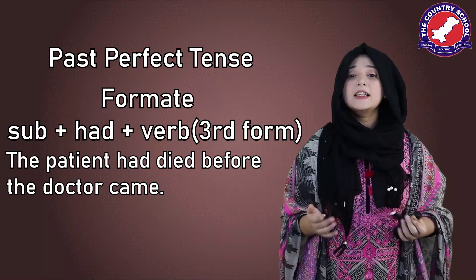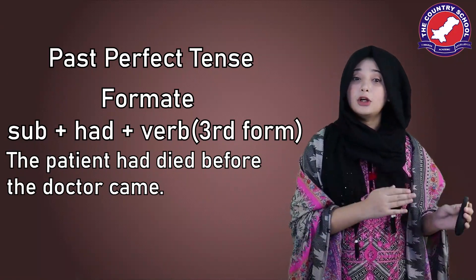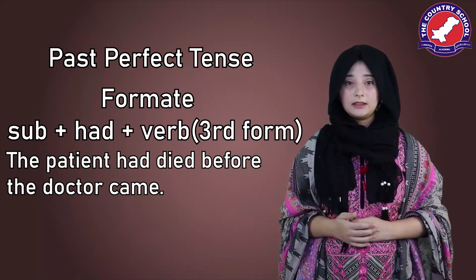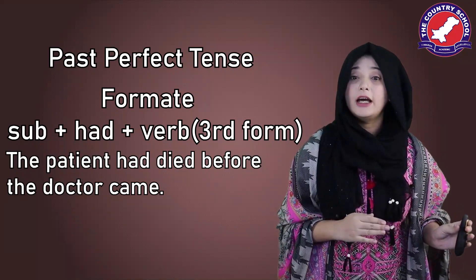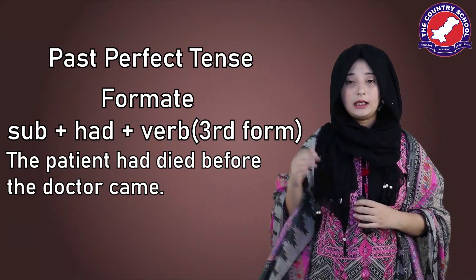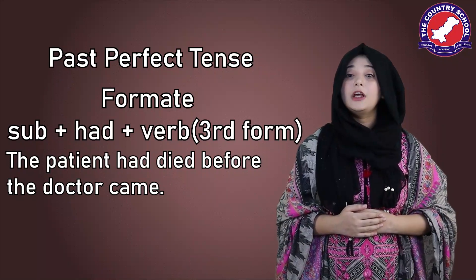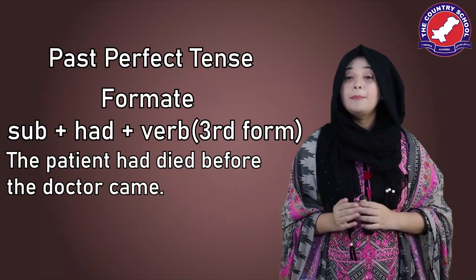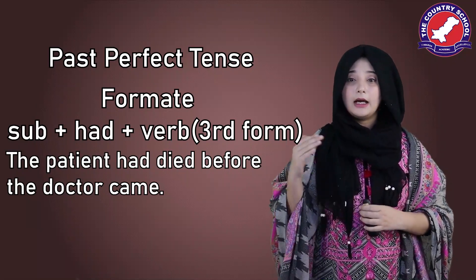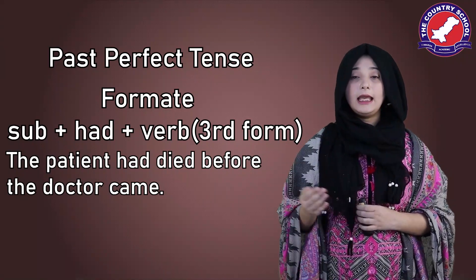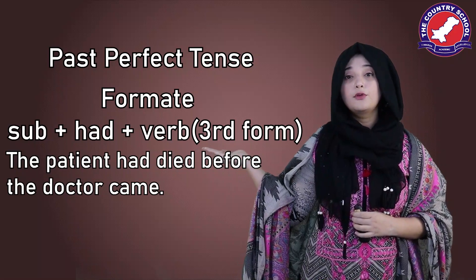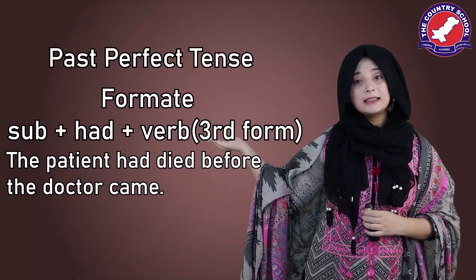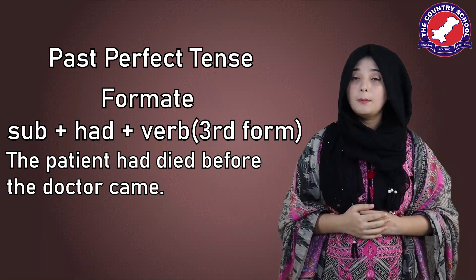In a sequence of two actions, we use past perfect tense for the action that took place first, and simple past tense for the action that took place next. The first action here was the patient's death, and the doctor came afterwards. That is why: 'had died' represents the past perfect tense, and 'the doctor came' represents the simple past tense.